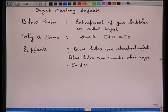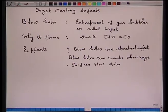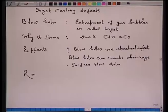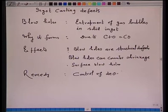Surface blow holes — those present at the surface — are harmful. During reheating, the steel will be oxidized and this is harmful during rolling. The remedy is to control the oxidation practice and ensure that blow holes are not present at the top surface of the ingot, since those are the only harmful ones.